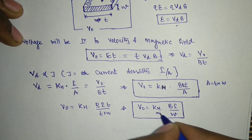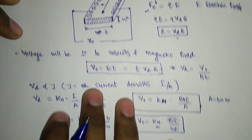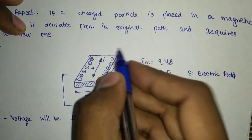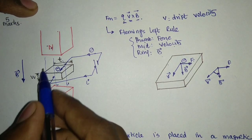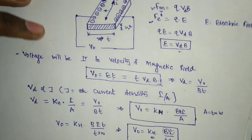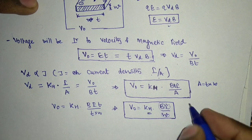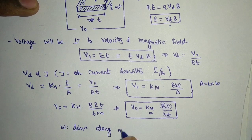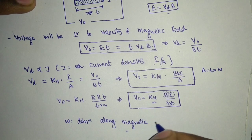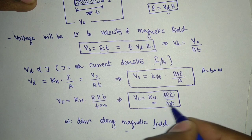All these values we already know: Kh is the Hall effect constant, B is the magnetic field, I is our current, and W is the dimension of this particular conductor which is along the magnetic field. We need to remember that W is the dimension along the magnetic field — it is usually represented as the thickness. If you are given multiple dimensions, take W as the dimension along the magnetic field, otherwise our answer will get wrong.